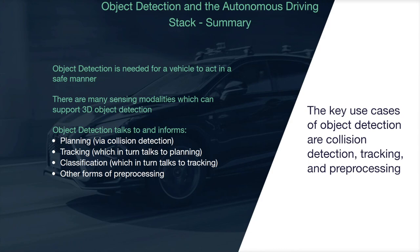So what did we just learn? Object detection is fundamental to the autonomous driving use case and is needed in order to fulfill it. There are multiple ways to fulfill the input requirements for an object detection stack, but we're mostly focusing on LiDAR. Lastly, the output of object detection is used in many places in the autonomous driving stack, ranging from planning, tracking, and classification. In the next section, we'll take a look at how the object detection stack is architected in Autoware Auto and some of the motivation behind that architecture.